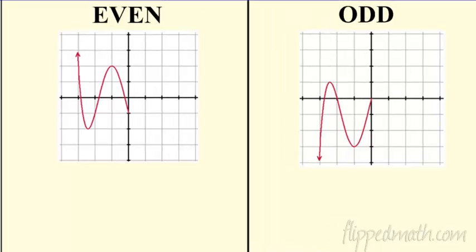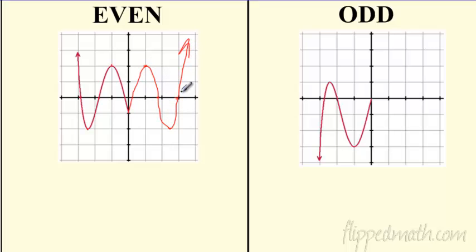Let's move away from graphs and break this down algebraically. If I give you half of an even function, I want to be able to draw the rest. I know it's symmetric around the Y-axis, so this point will be the mirror of that point, this X-intercept will match that X-intercept — they're all mirror images. So it's just the mirror image of what's happening, and it's going to look something like this.